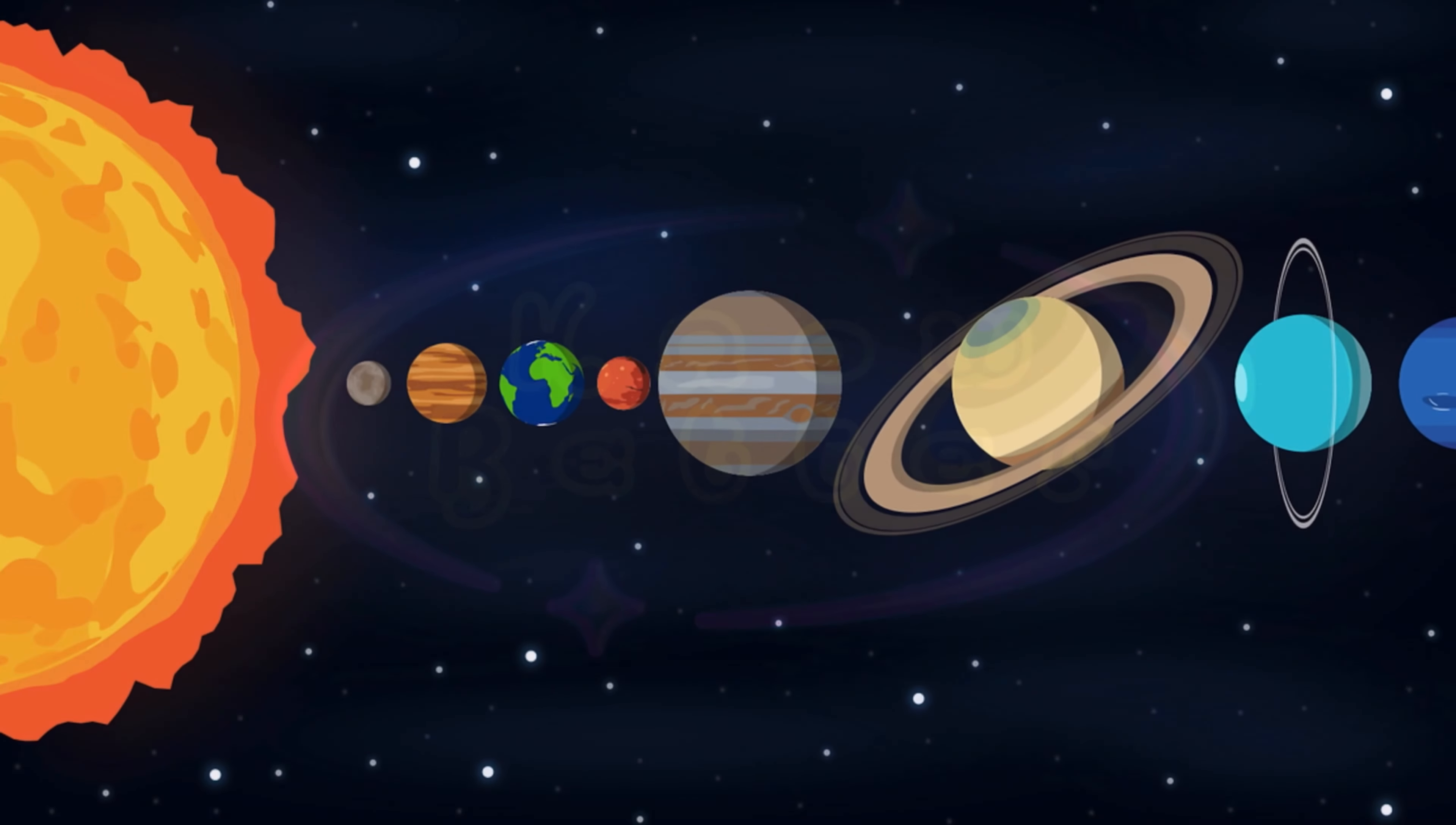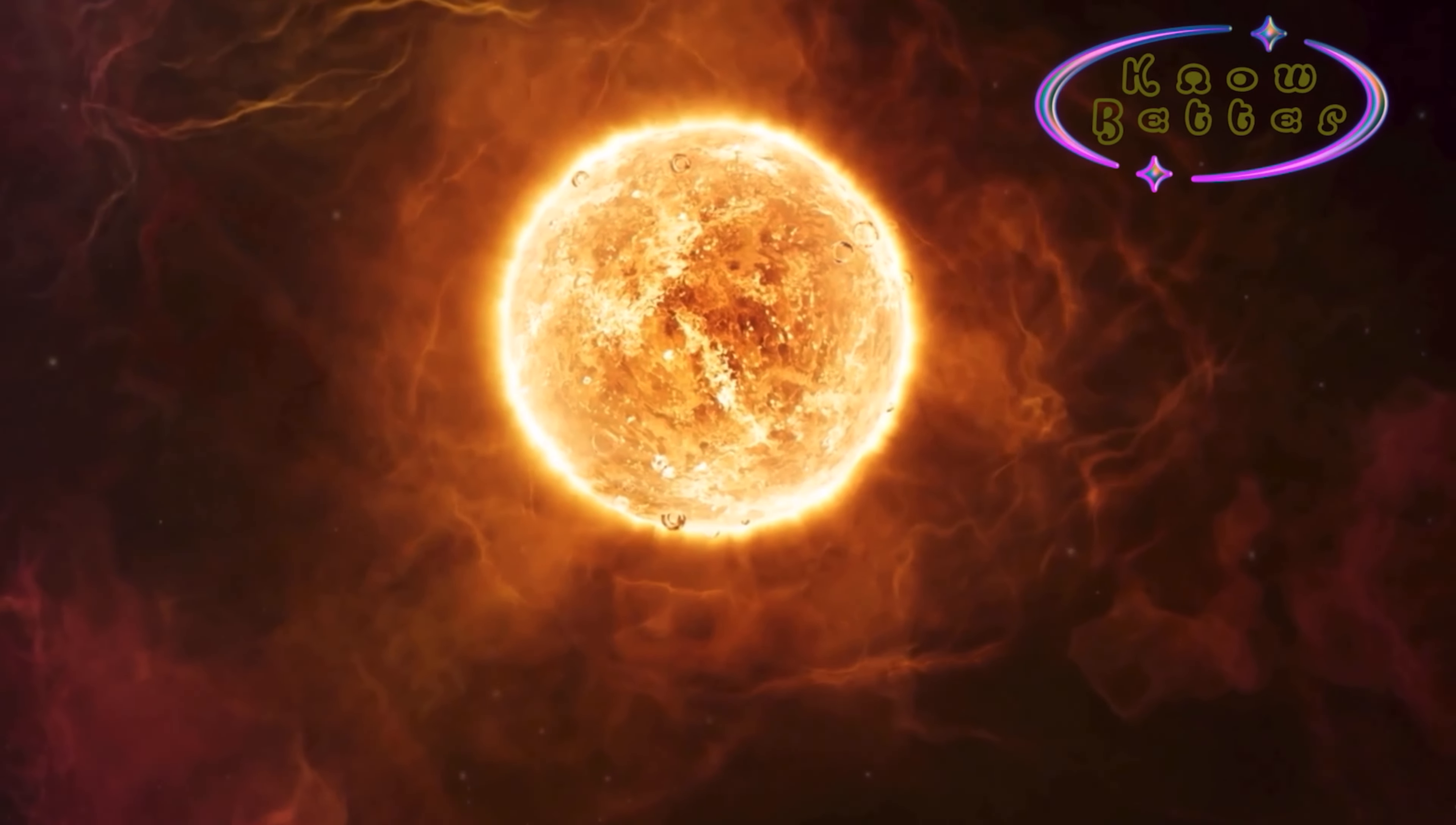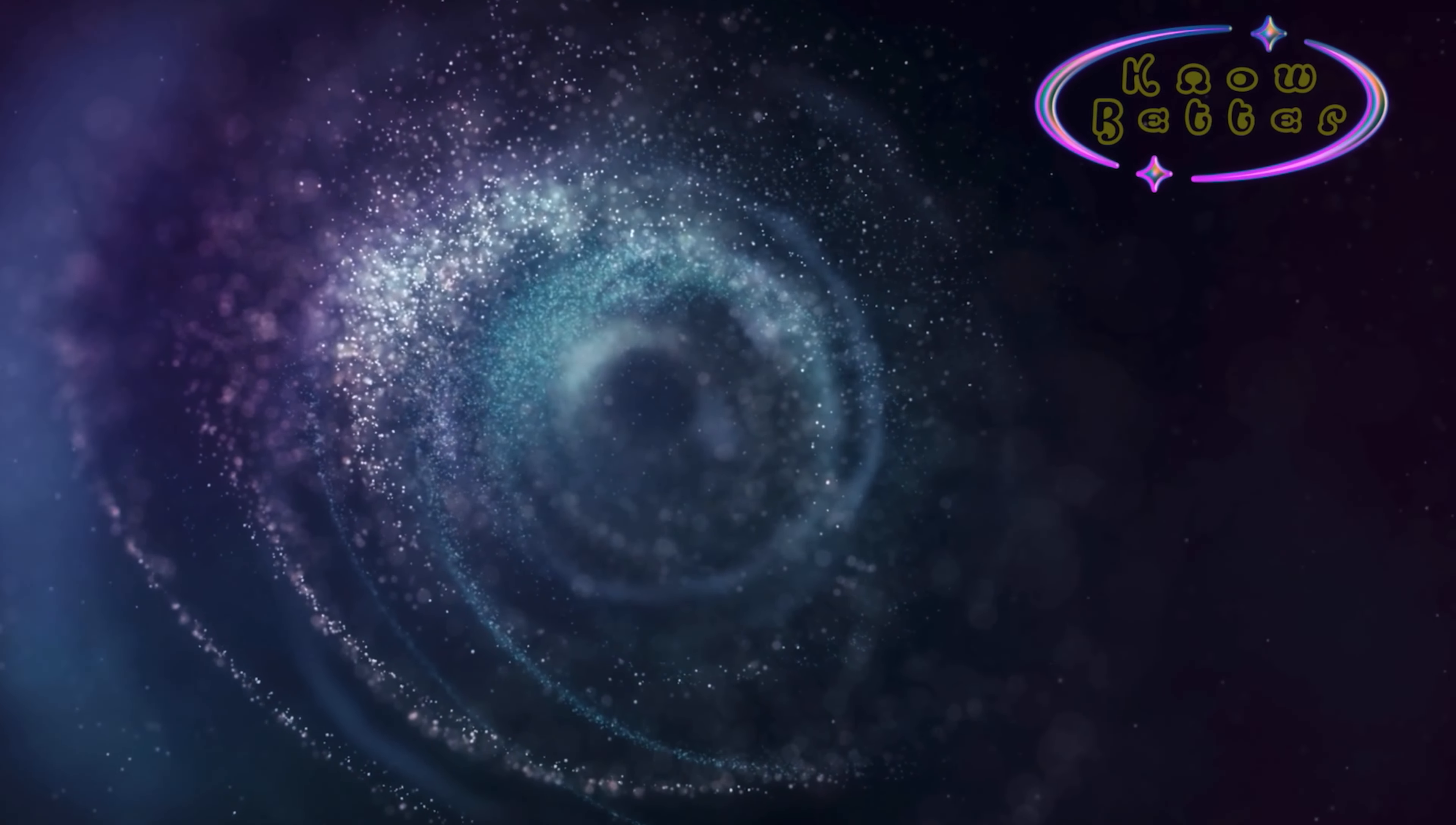Welcome back. Today we are going to discuss the nearest star to our planet. The Sun is like a father figure to our family of the solar system. The Sun is at the center of the solar system. Its size is 1.3 million times that of the Earth.